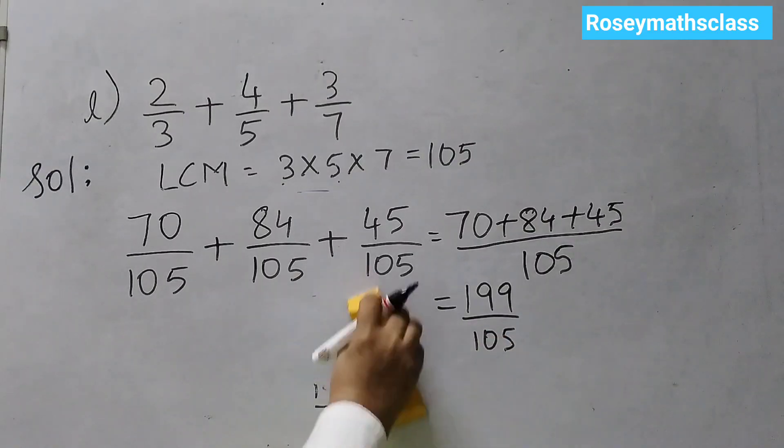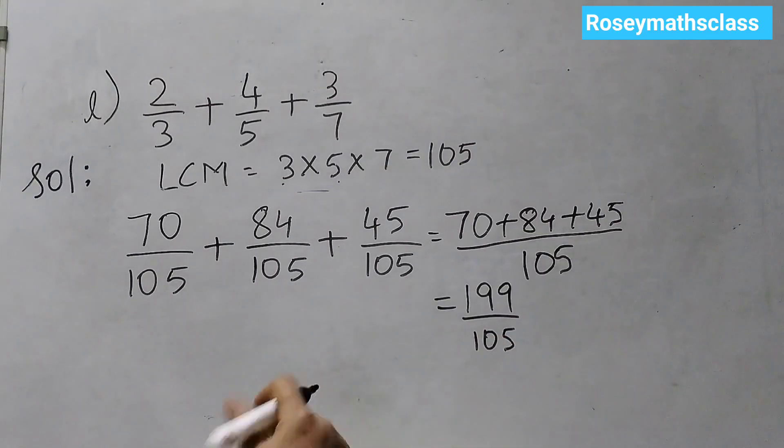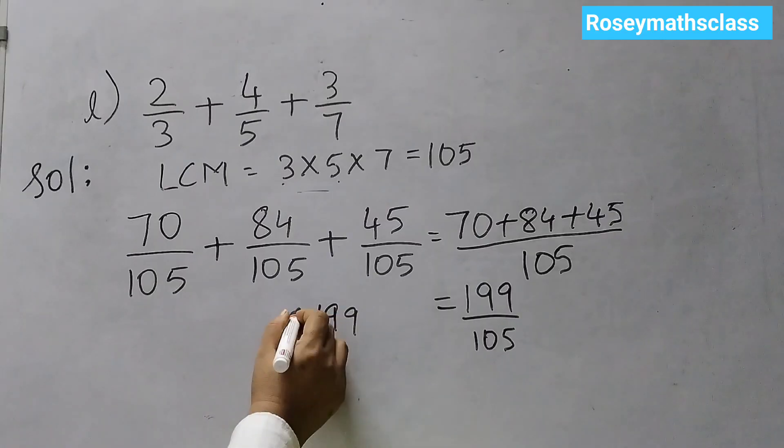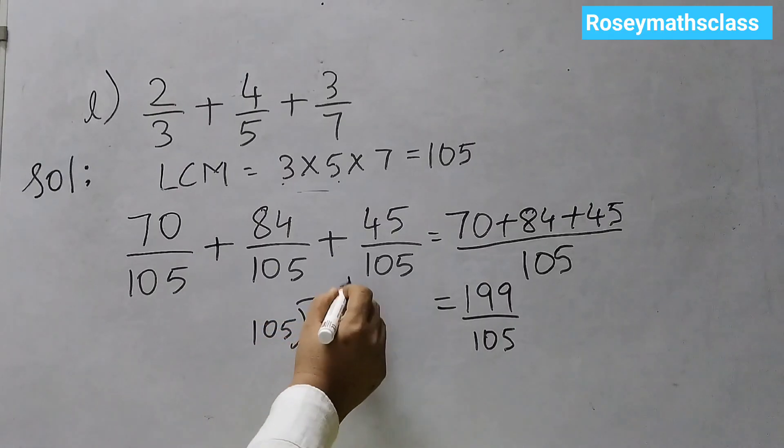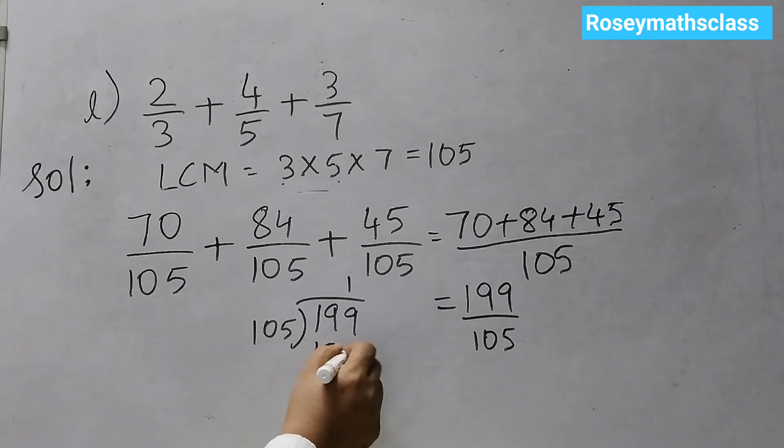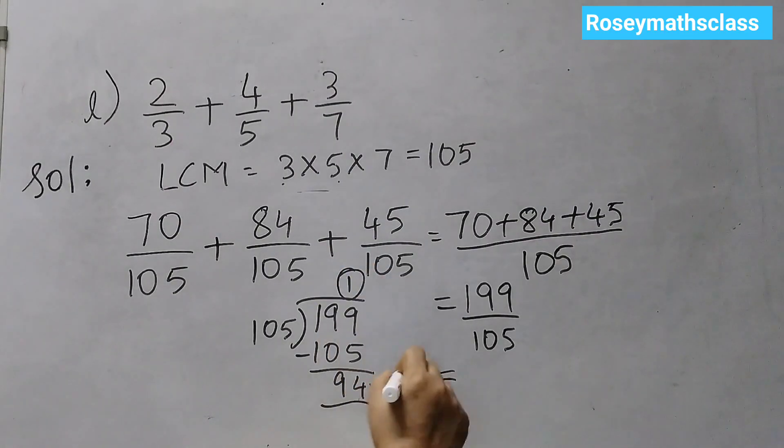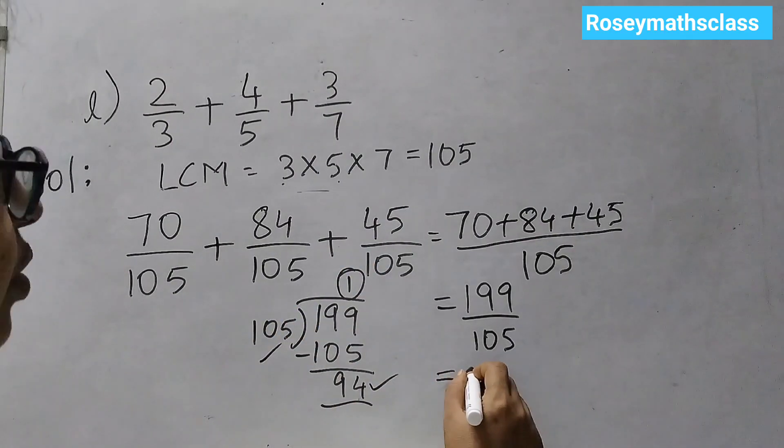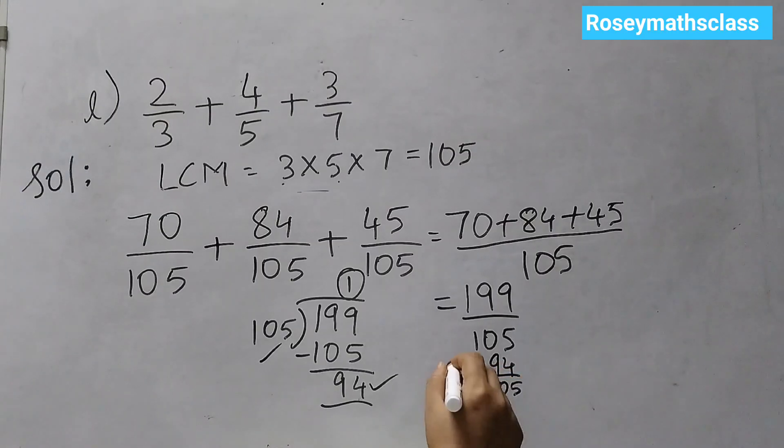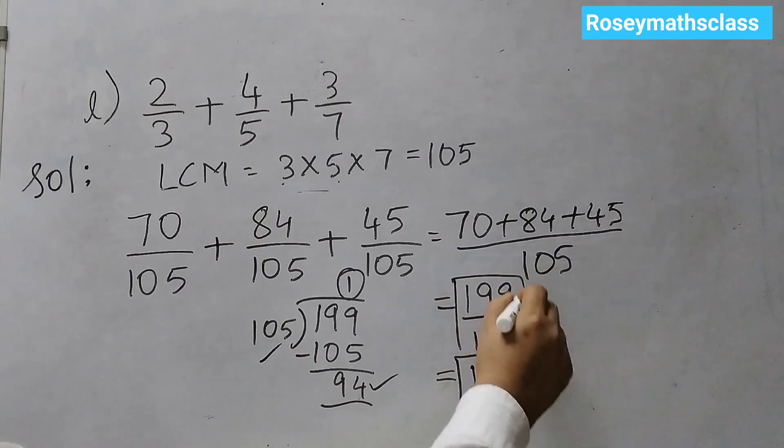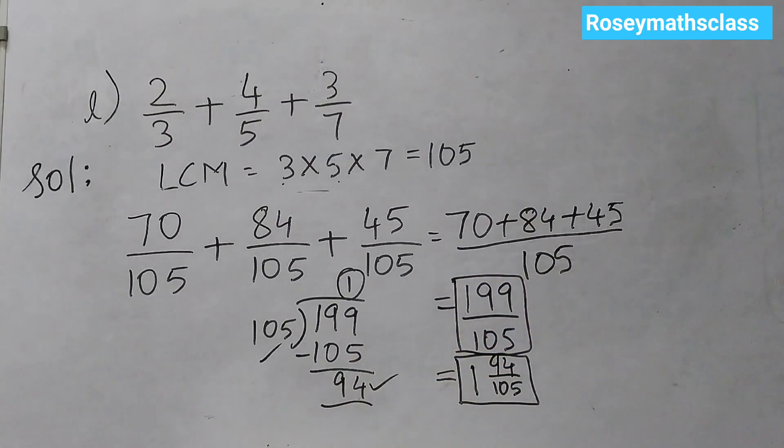Also, we need to convert this to mixed fraction if required. So, 199 divided by 105. 105 times 1 is 105. 9 minus 5 is 4, remainder 94. So, 1 whole 94 over 105. So, as a mixed number, this is the answer. As an improper fraction, this is your answer.